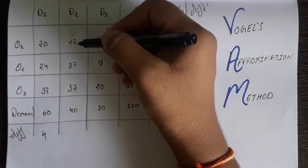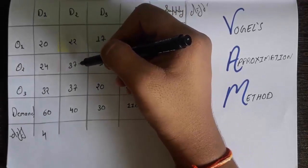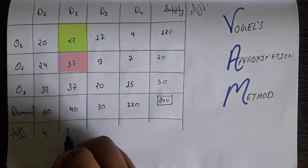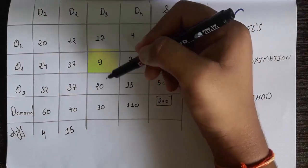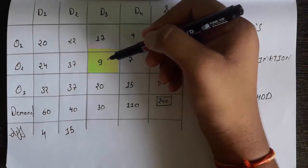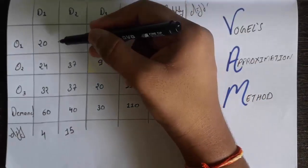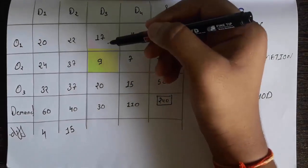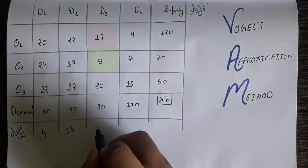In the D2 column, among 22, 37, and 37, the smallest number is 22 and the next number is 37. So 37 minus 22 gives a difference of 15. In the third column (D3), among 17, 9, and 20, the smallest number is 9. Because there is a number before 9 (which is 17), we take that adjacent number, giving a difference of 17 minus 9, which is 8.